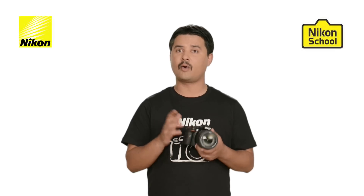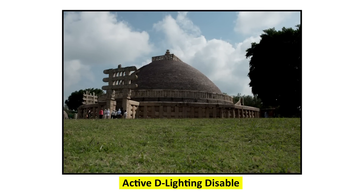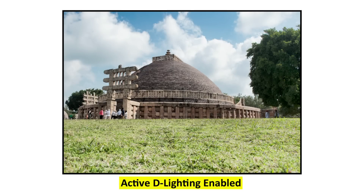Let us see with the help of an example how Active D-Lighting works. Here is an image shot without Active D-Lighting. In the shadow areas there are no details, and in the clouds you won't find any detail either. The image also does not look very colorful because the saturation is very low. In this kind of situation, you just need to switch on Active D-Lighting and click an image. Once you do that, you will see a drastic change — there are lots of details in the sky, and details in the shadow areas have just popped up. This is a very good feature for landscape shots.